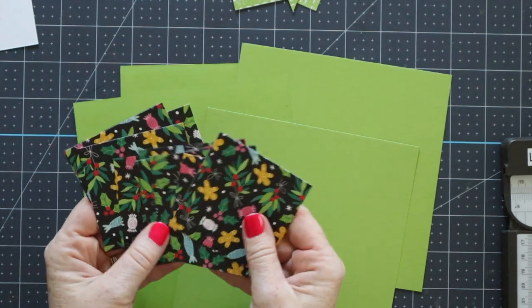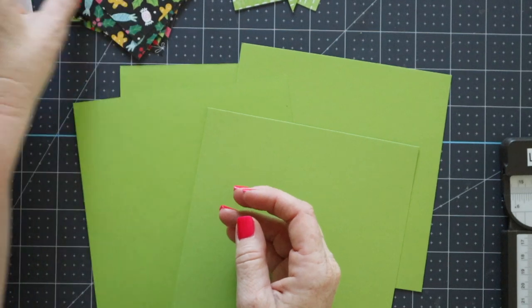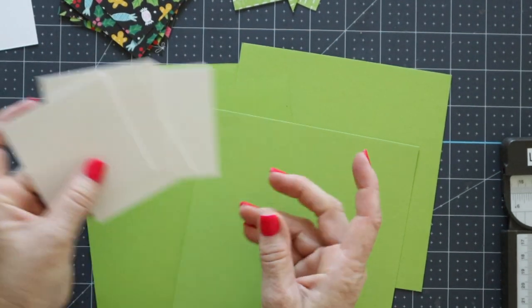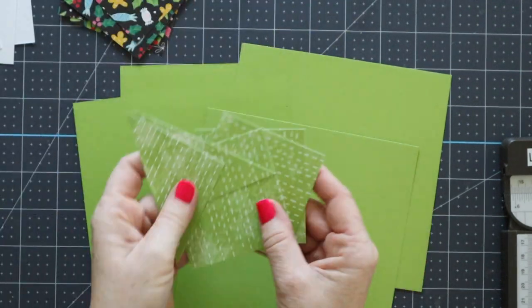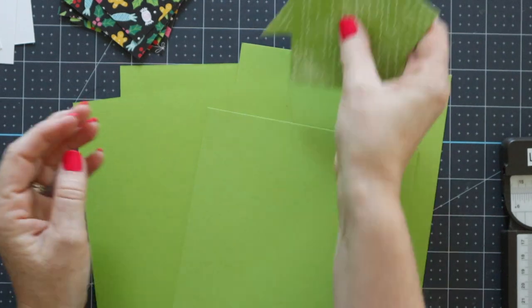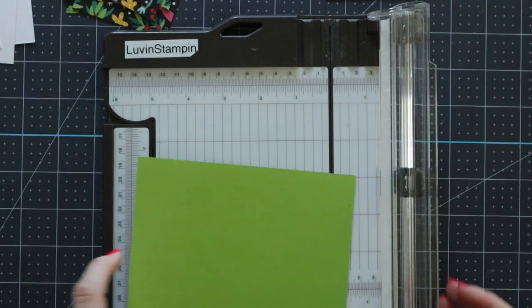I have four pieces of 6x6 Granny Apple Green cardstock, ten pieces of Celebrate Everything Designer Series paper cut at 2 3/4 by 2 3/4, ten pieces of basic white thick cardstock cut at 2 7/8 by 2 7/8, and four more pieces of that Celebrate Everything cut at 2 7/8 by 2 7/8.